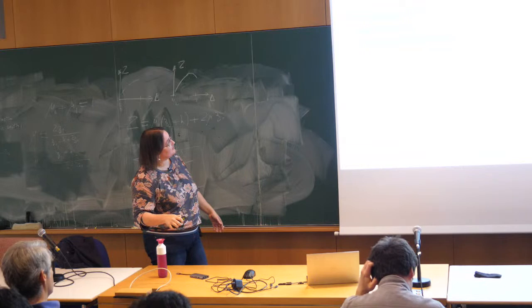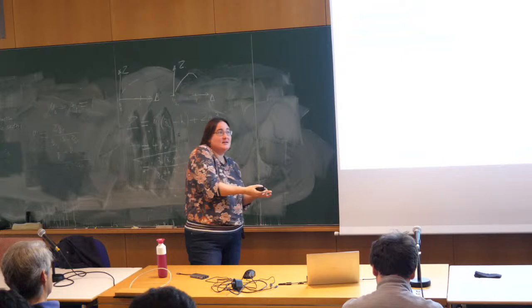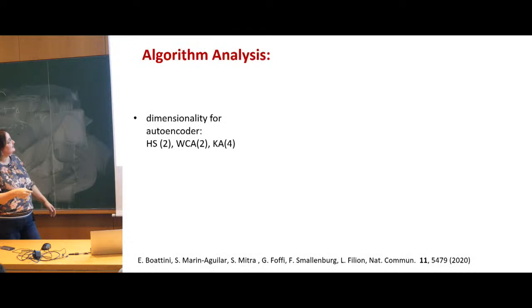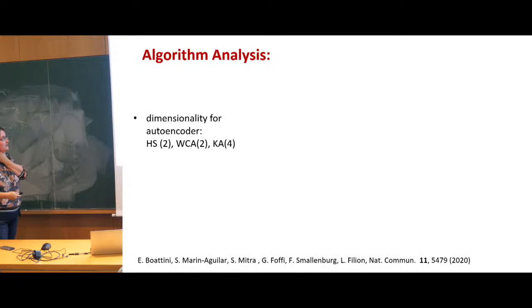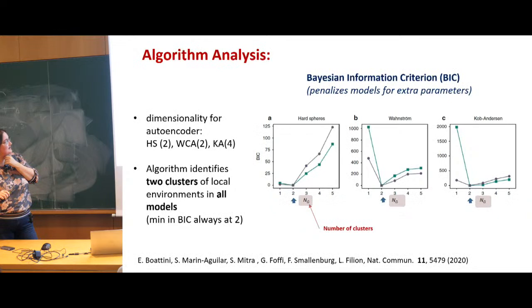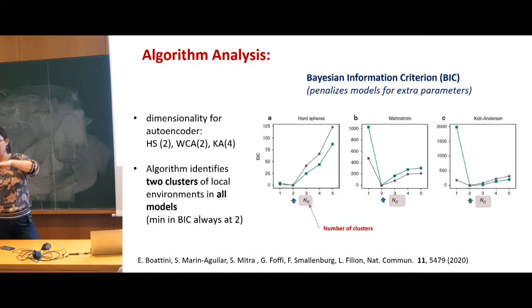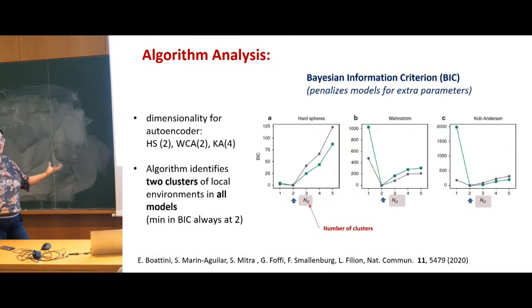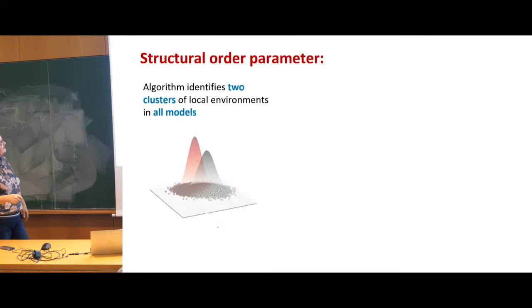The first step is to find what dimensionality you need to go down to. The algorithm is very quick, so you can try a number of different low dimensions — two, three, four — and use a threshold for when you're not losing a lot of information. It turns out that for hard spheres we could hold most information in two dimensions. For the repulsive Weeks-Chandler-Andersen, also two, but for Kob-Andersen we couldn't go down to lower than four dimensions. In all cases the algorithm identified two clusters using Gaussian mixture models.